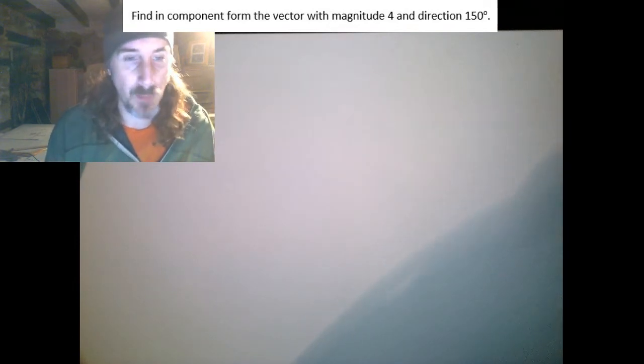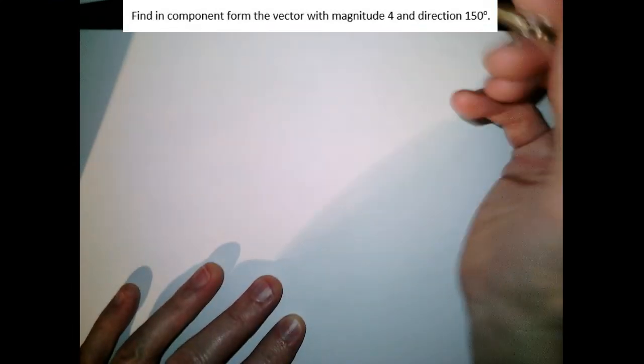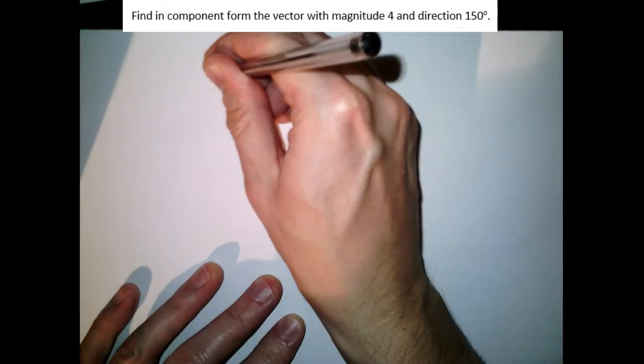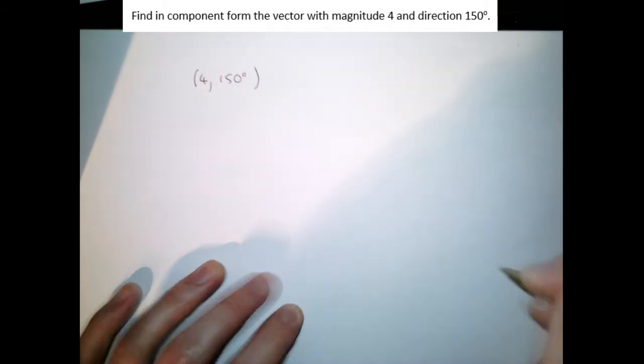So what do we mean by that? Well, let's think through some of these things. In this particular example we're given the magnitude and direction: magnitude 4 and direction 150 degrees of a vector.